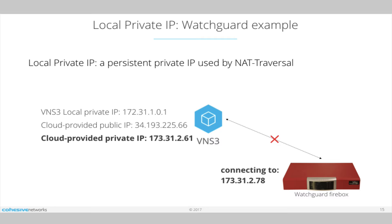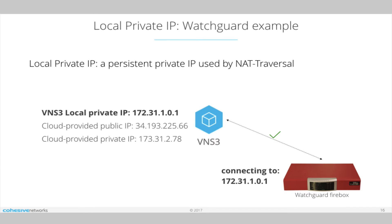If instead of our local private IP you were configuring the WatchGuard with the actual private IP of the VNS Cubed, the next time you brought up a VNS Cubed for this topology — if you have to migrate, or Amazon killed your instance or something — and if you didn't bring it up on this exact address, the partner would have to edit their configuration, which could be catastrophic.